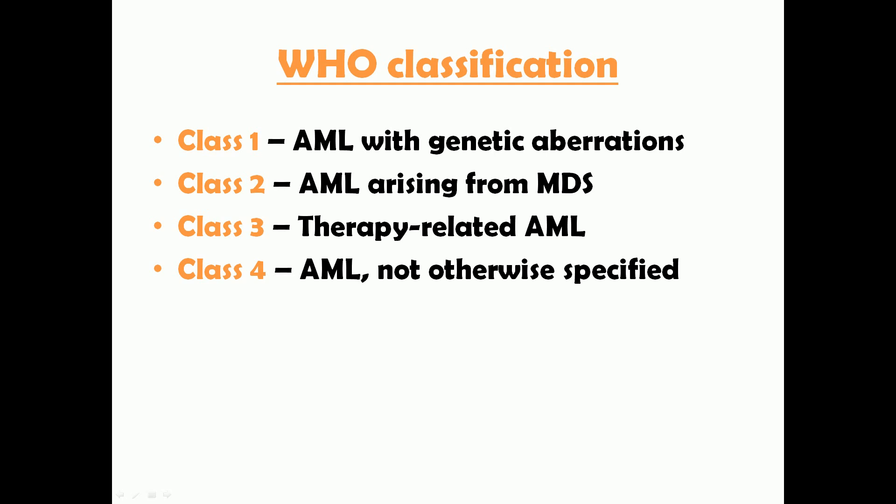Class one is AML with genetic aberrations, meaning there is an identified genetic aberration such as translocation 15;17 or inversion 16. Class two includes AML arising from myelodysplastic syndrome. Class three is therapy-related AML, which occurs following cancer chemotherapy or radiotherapy. All other types not otherwise specified fall under class four.